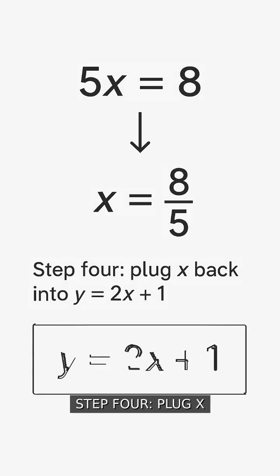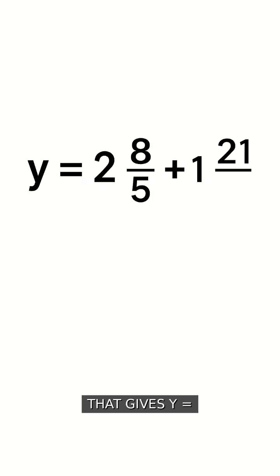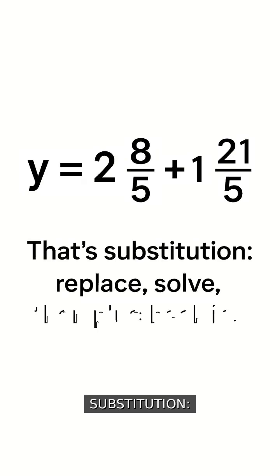x equals 8 fifths. Step 4. Plug x back into y equals 2x plus 1 to find y. That gives y equals 2 times 8 fifths plus 1 equals 21 fifths.